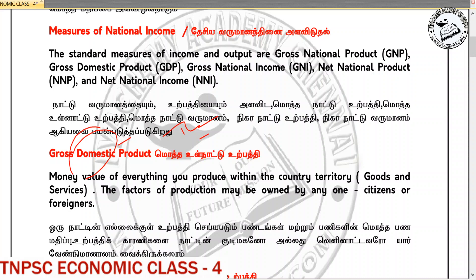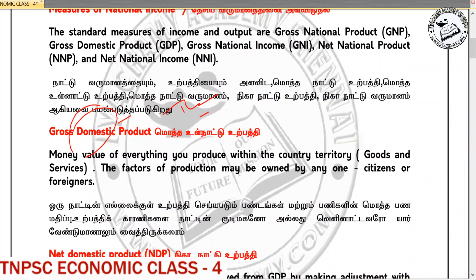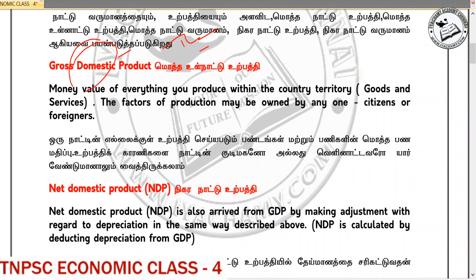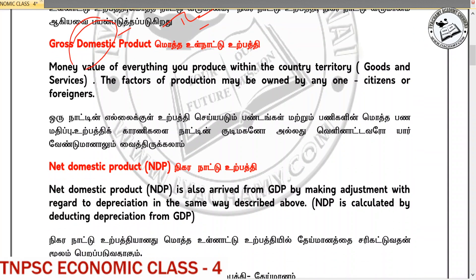GDP is included. All the money produced domestically is available. This is the domestic product.